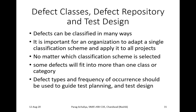Defect types and frequency of occurrence should be used to guide test planning and test design. The organization needs to focus on what type of defect it is and how many times the defect is going to occur — that is the frequency of occurrence — and this should be properly focused during test planning and test design.